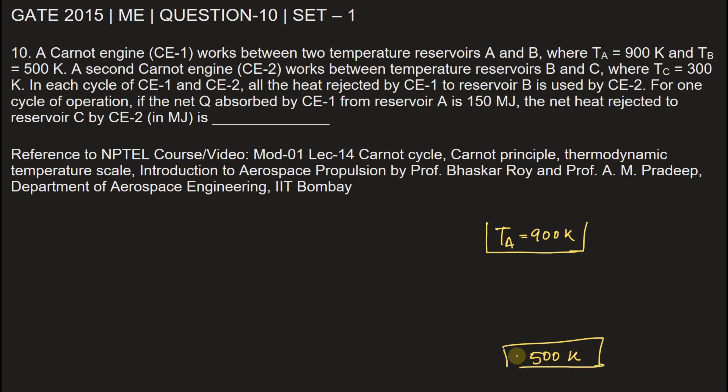This is TB. Between reservoir A and B we have a heat engine HE1, so the work done by this engine is W. Heat rejected by this engine is Q2 and heat absorbed from this reservoir is Q1.